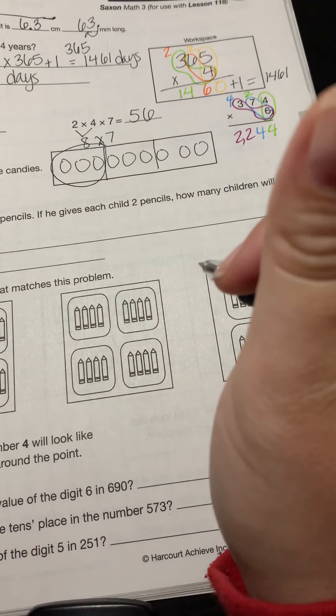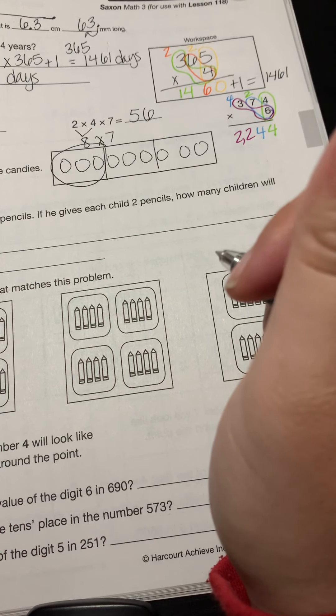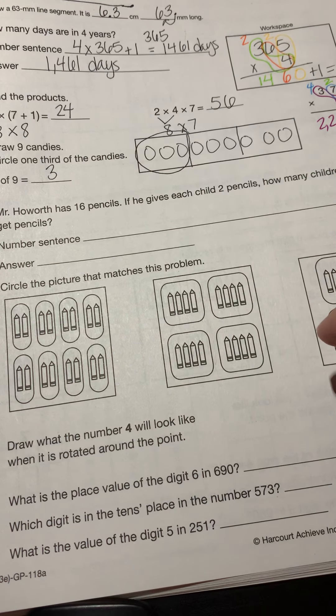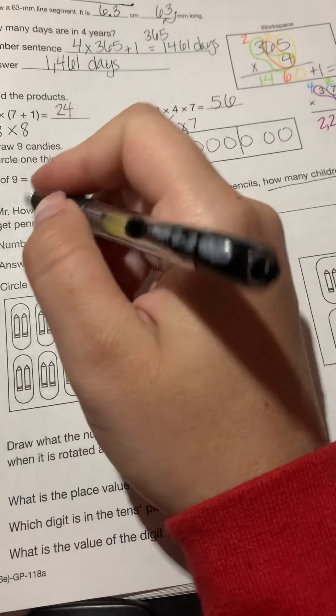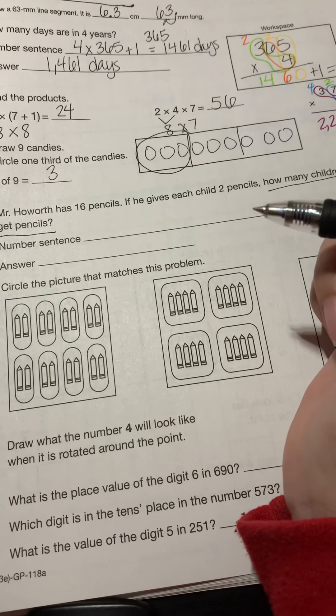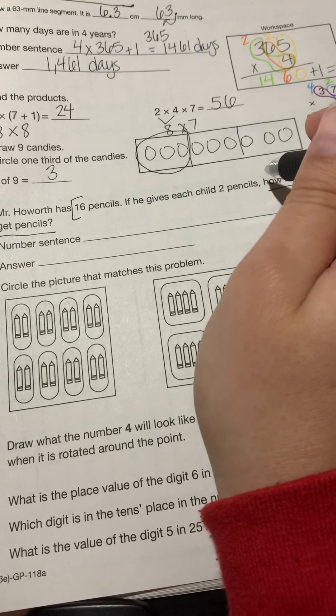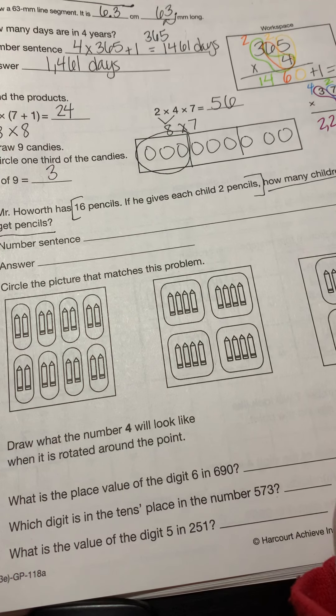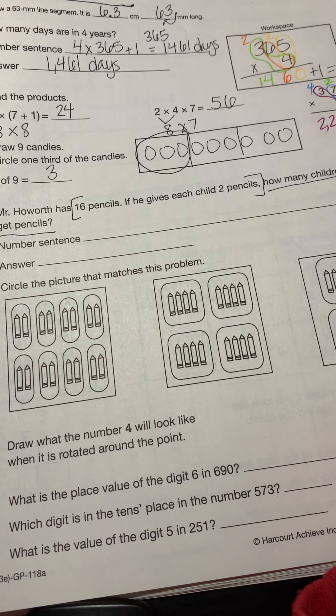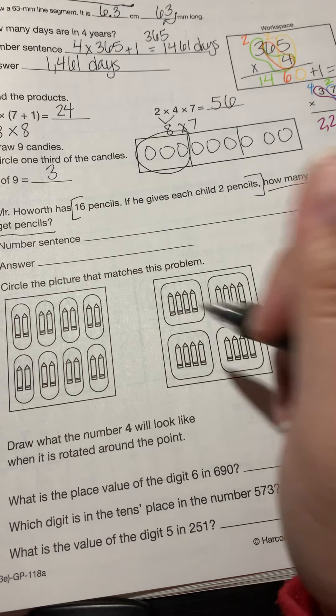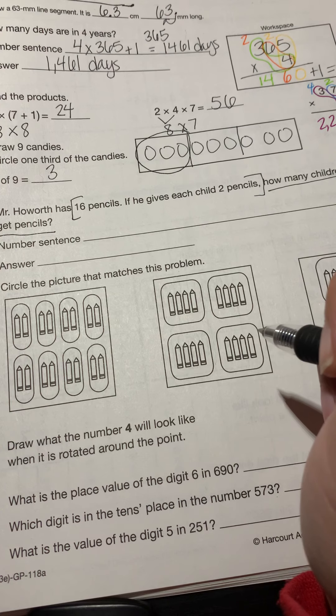How about number four? Mr. Howarth has 16 pencils? If he gives each child two pencils, how many children will get pencils? What is this problem asking us to do? It's asking us to find out how many children will get pencils. What information do I need to use to solve the problem? Well, he has 16 pencils and he's giving each child two pencils. Do we know the total number of pencils that he has? We do. Is it equal groups if each child is going to get two pencils? It is. So what operation are we going to use here? Division.